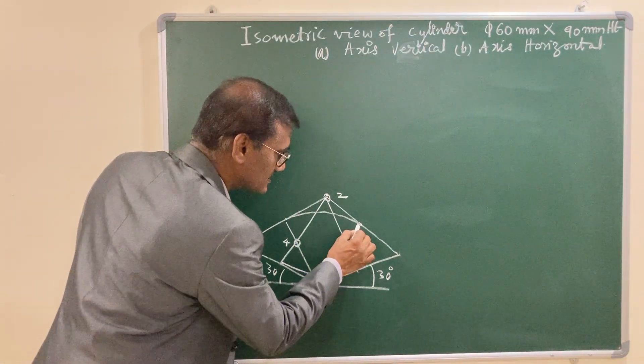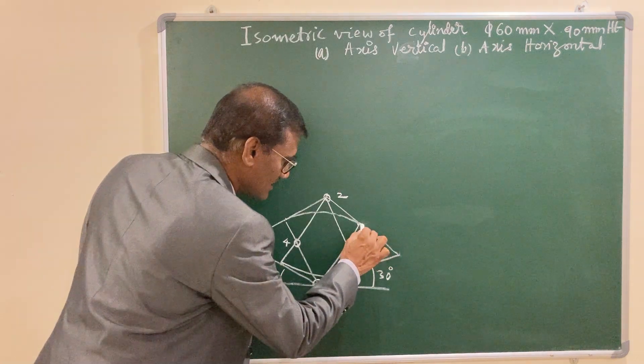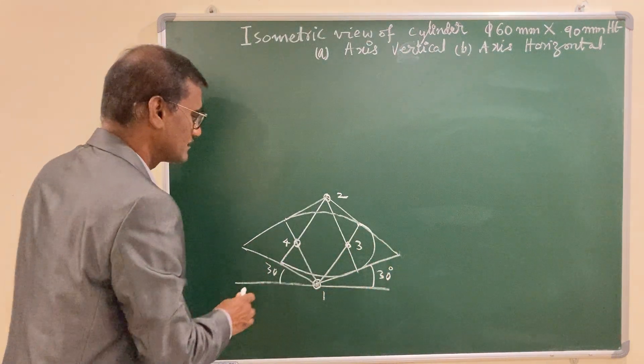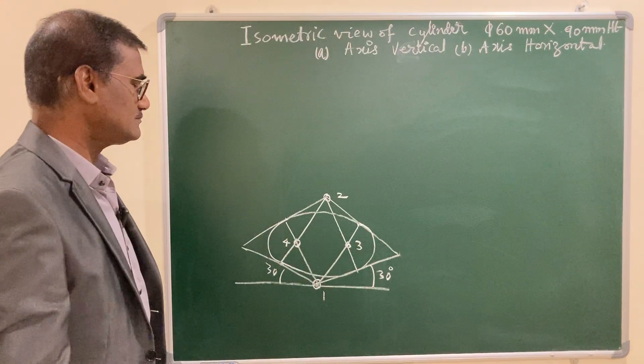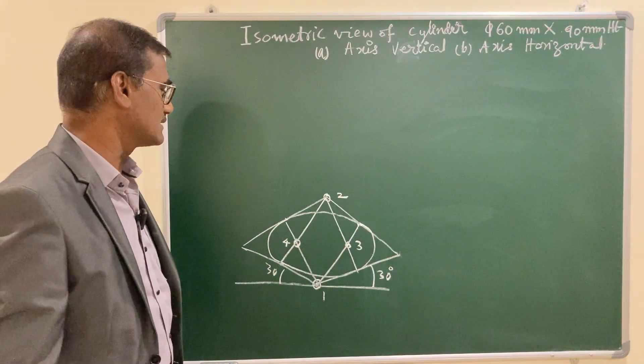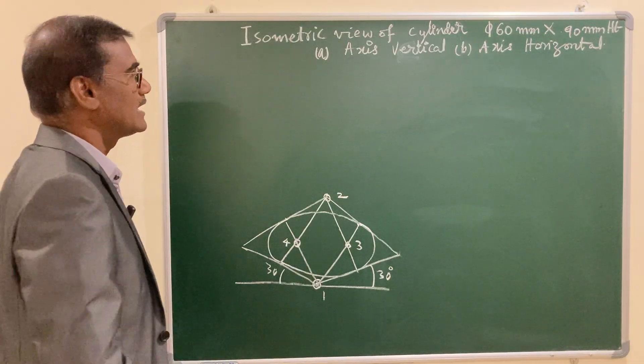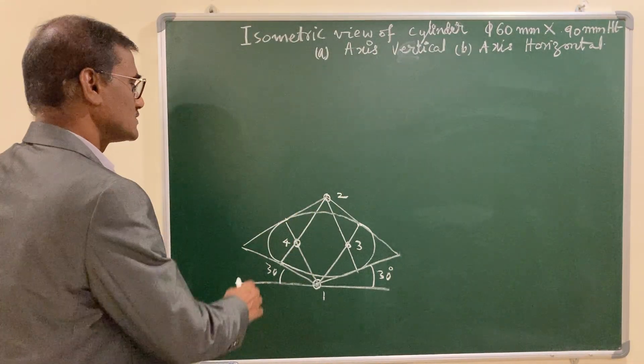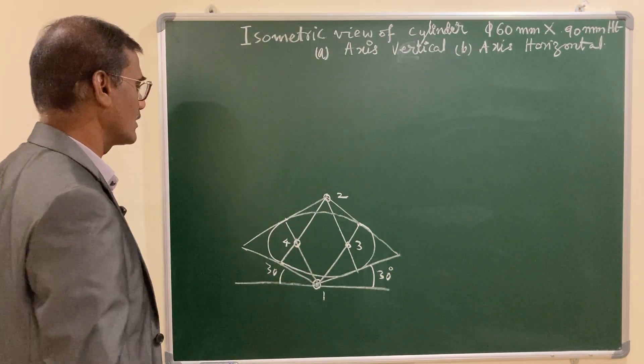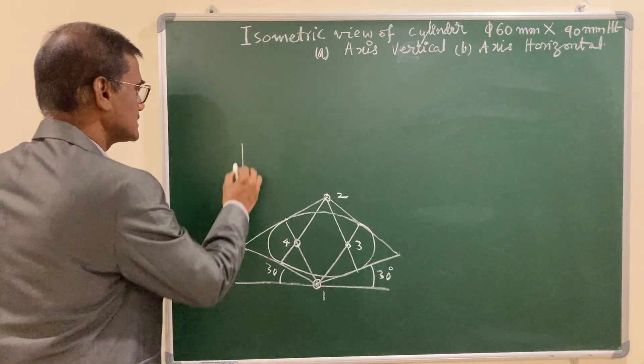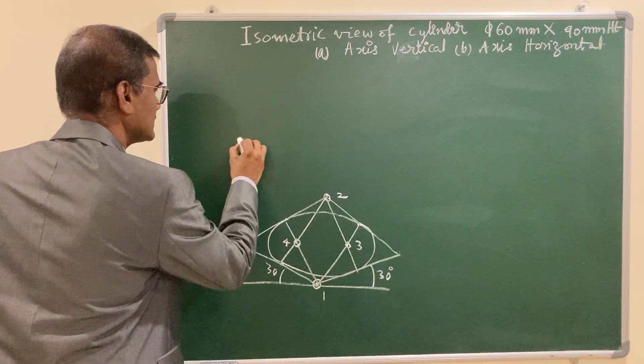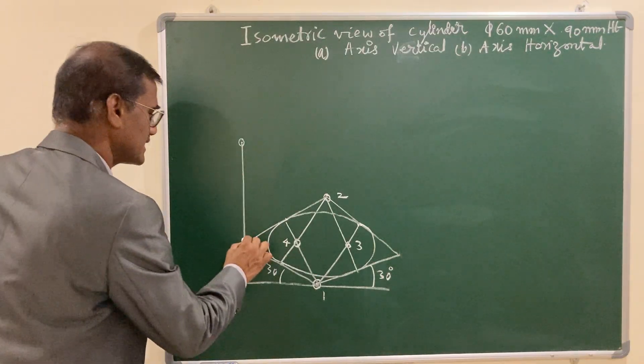3 as center, this is small radius, let us join these 2, and similarly 4 as center join these 2. This is the bottom of the cylinder. The height is given 90 mm, so from each corner of the parallelogram erect a height of 90 mm. Let us mark the point at a distance 90 mm from this point.